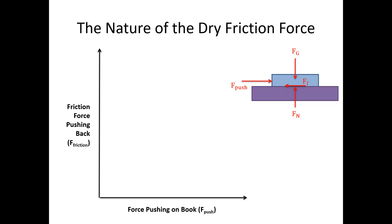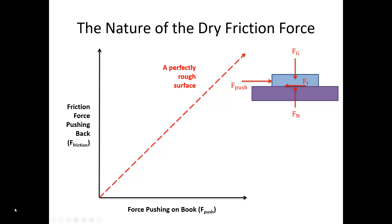Let's look at the nature of the dry friction force. Imagine a book sitting on a table — the book is blue, the table is purple. In the free body diagram we have gravity pushing down, the normal force pushing back up from the table, a pushing force in one direction, and a friction force opposing that sliding. On a perfectly rough surface, the pushing force and the friction force are equal and opposite — the harder I push, the stronger the friction force back against me. This gives a line with slope one where friction force equals pushing force.